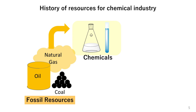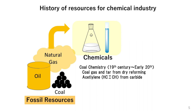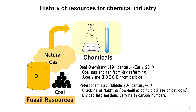We have been using fossil resources to produce chemical substances and chemical products. The period from the 19th century to the early 20th century is often referred to as the era of coal chemistry. Coal was subjected to dry reforming to produce gas, from which a substance called carbide was created. This marked the era of chemical processes based on acetylene as a raw material. By the mid-20th century, after World War II, the era of petrochemicals emerged.